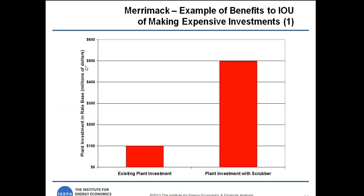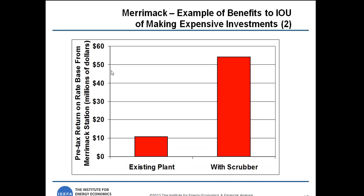The Merrimack plant is owned by a regulated utility in New Hampshire. Before a scrubber was put on the plant, the investment was about $100 million. Adding the scrubber added another $400 million of investment. But since the plant was regulated, the return on investment — the profit for the owner — went from a little more than $10 million to more than $50 million with the scrubber. This illustrates the incentive for regulated utilities to invest in expensive additions.